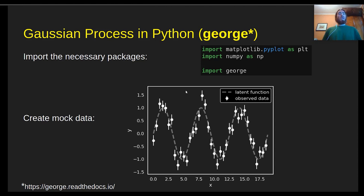For this example, we're going to generate some mock data. So we have our latent function, our true function. This is a periodic function in this case. And we have our simulated observations with a given uncertainty.